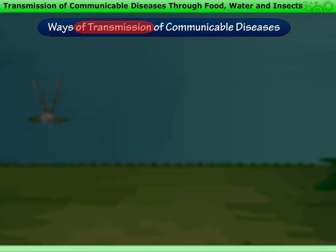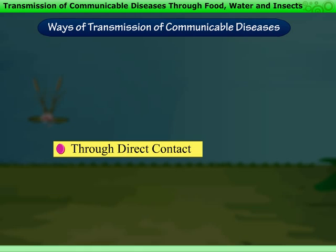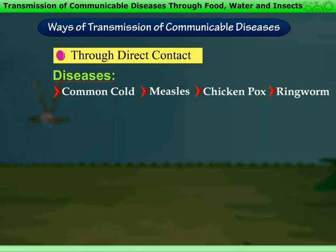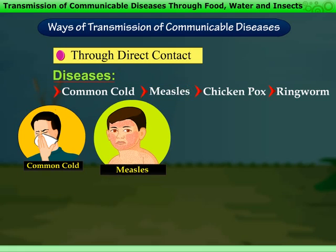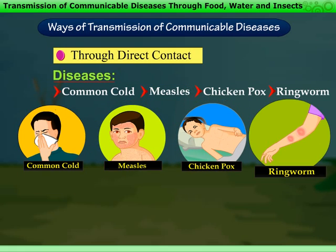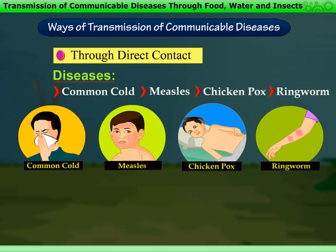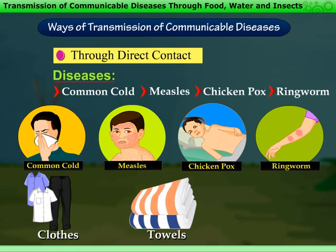One more way of transmission of communicable diseases is through direct contact. Diseases like common cold, measles, chicken pox, ringworm, etc. spread through direct contact. They spread by sharing clothes, towels, combs, etc. which have been used by a person suffering from these diseases.